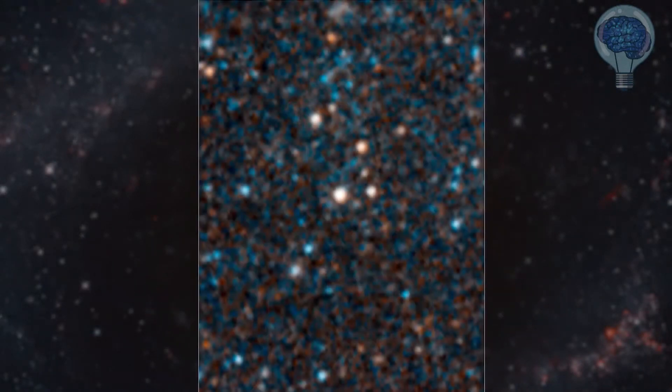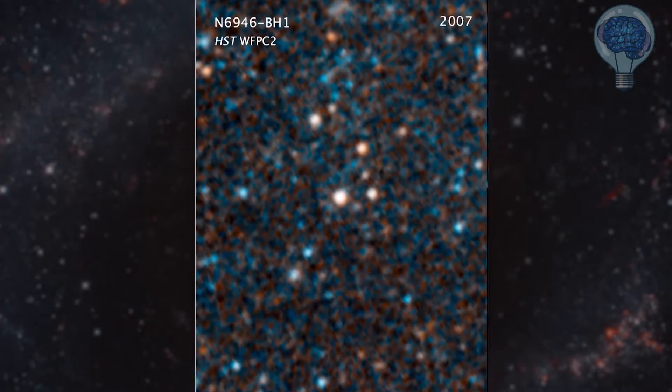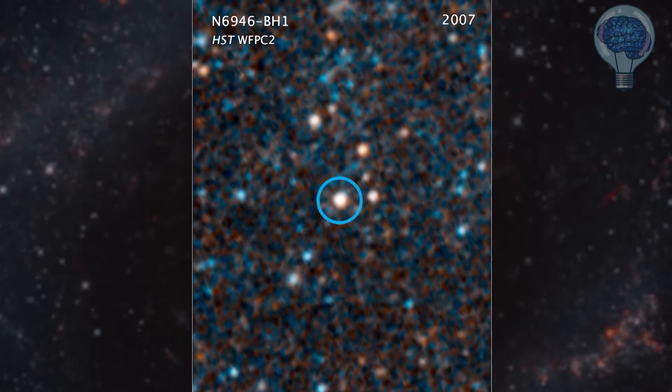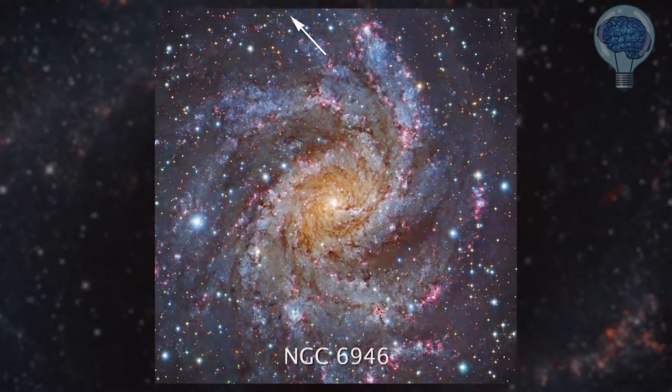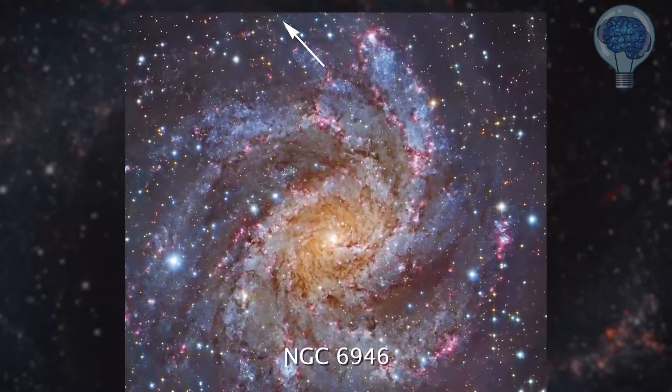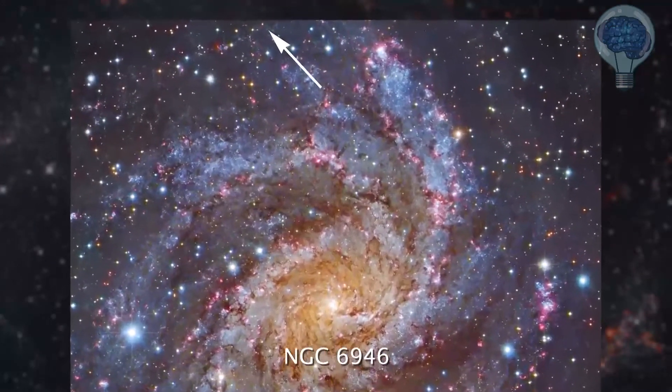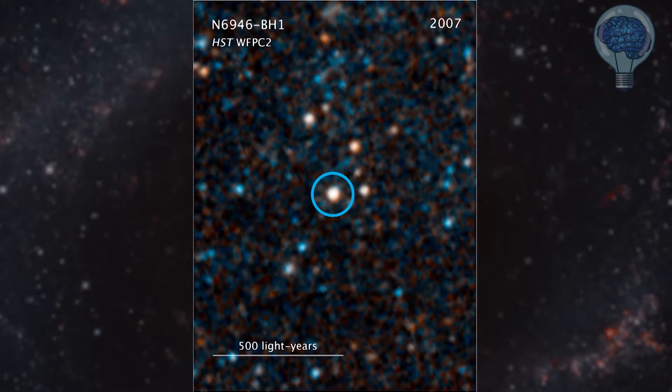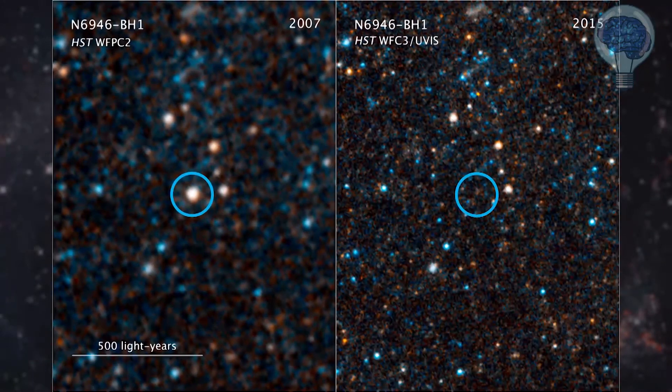In this visible light image from the Hubble Space Telescope, we can see a large star about 25 times the mass of our Sun, around 22 million light years away in the galaxy NGC 6946. This was in 2007, but in a Hubble image from 2015, looking with the same filters at the same wavelength, the star appears to be gone.